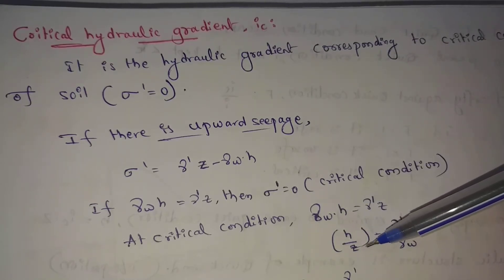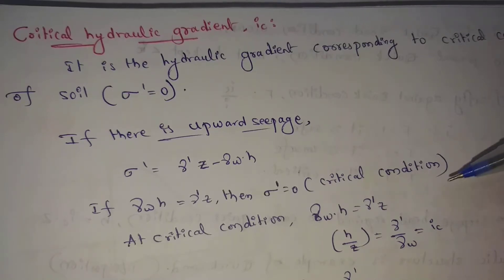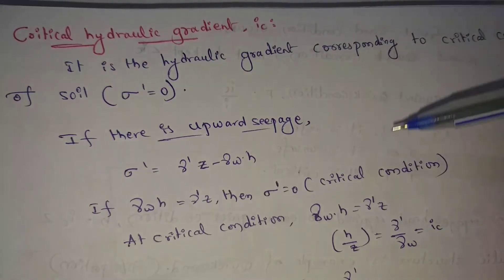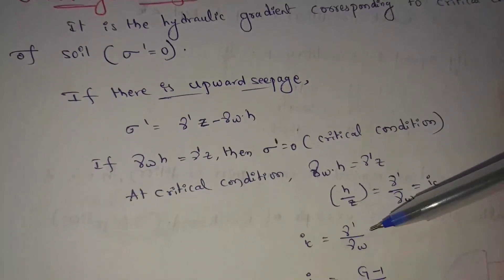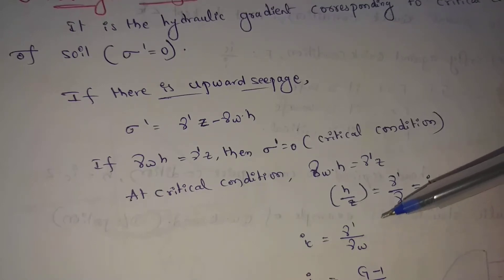So h by z equals gamma dash by gamma w. This is Ic — Ic means critical hydraulic gradient. So Ic equals gamma dash by gamma w.